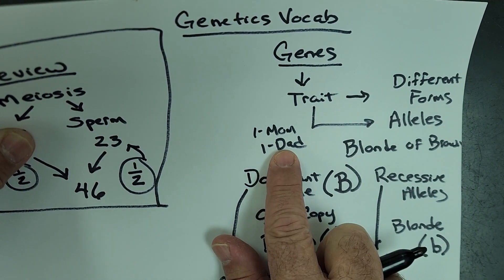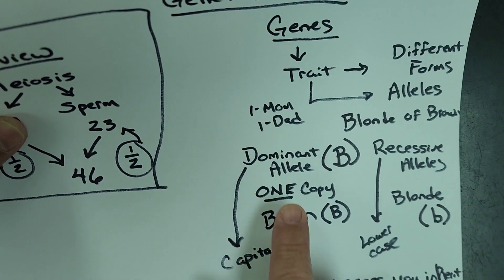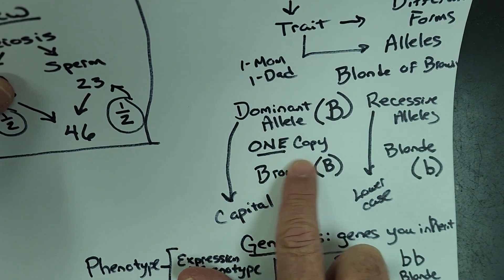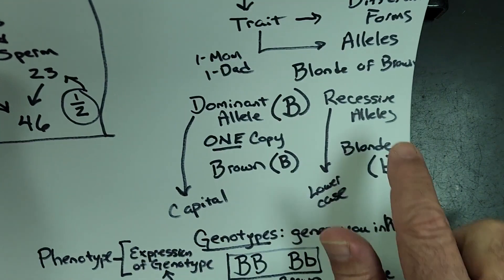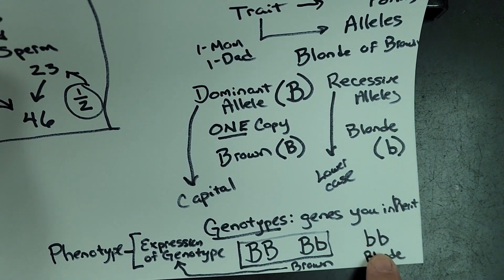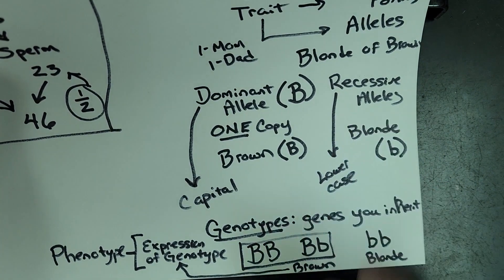You get one from mom, one from dad. Dominant are always expressed, even if you only have one copy. Recessive can only be expressed if you got two copies of that recessive gene.